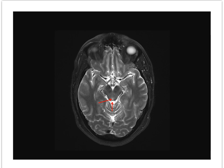In the midline here we have the cerebral aqueduct, and surrounding that is the periaqueductal gray. These structures lie at the approximate level of the decussation of the superior cerebellar peduncles.